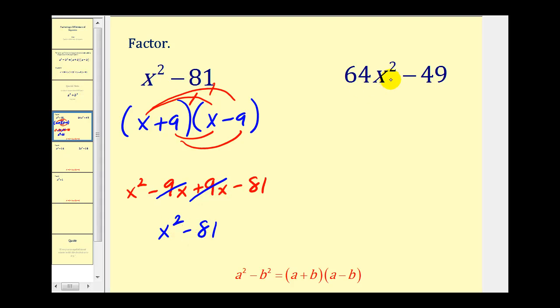Next we have 64x² minus 49. Again, this is a perfect square, so is this, and we have a difference. If we needed to, we could show some work here. 8x to the second power does give us 64x², and 7² does give us 49. So if that's helpful, we can show this.